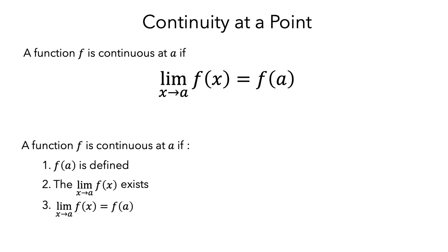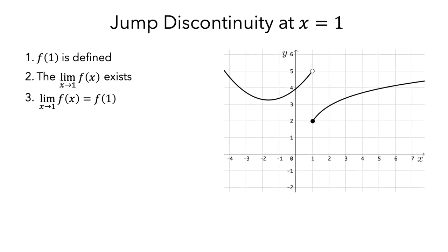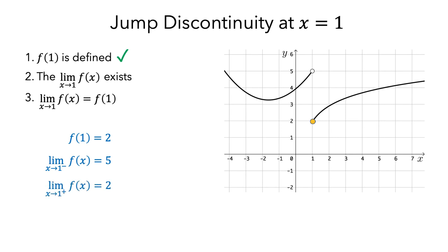Let's see how these conditions relate to the three initial examples. First, let's look at the function with the jump discontinuity. We can see from the graph that f(1) equals 2, so f of 1 is defined, and we have satisfied the first condition. Looking at the limit from the left as x approaches 1, this appears to be equal to 5. However, the limit from the right appears to be equal to 2. So the overall limit does not exist because the limits from the left and right don't match, and the second condition is not met. Since we haven't met one of these conditions, f is not continuous at x equals 1.